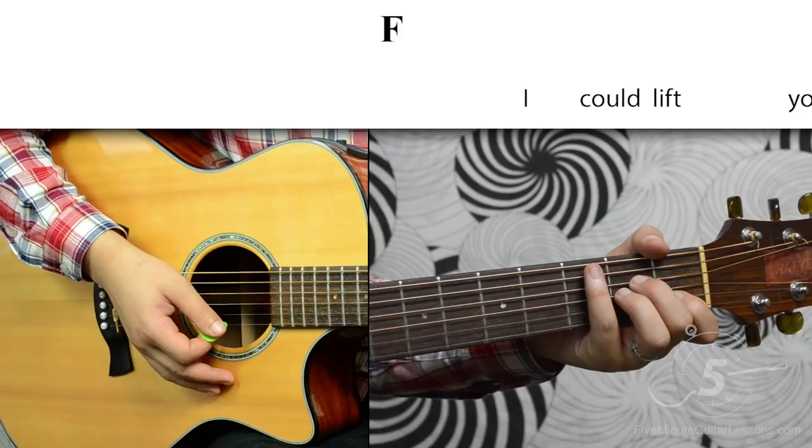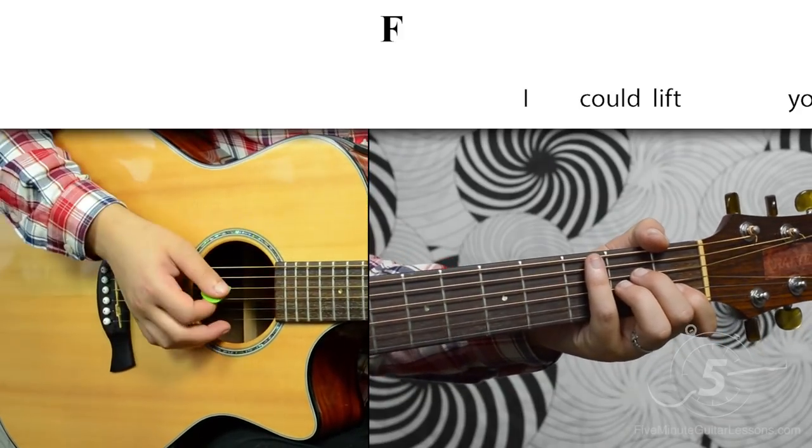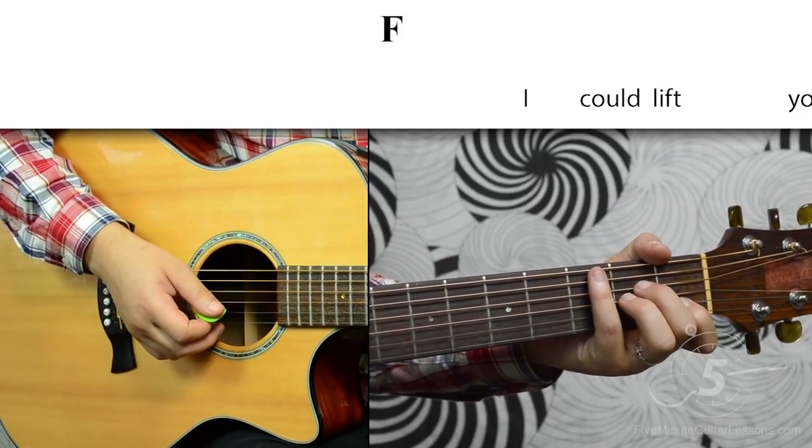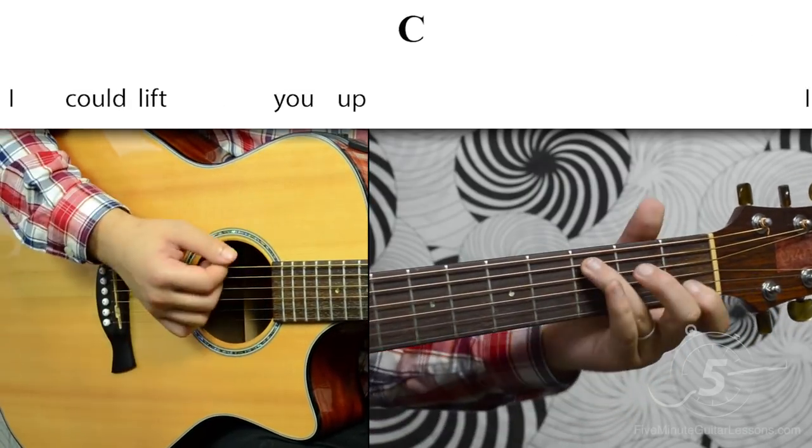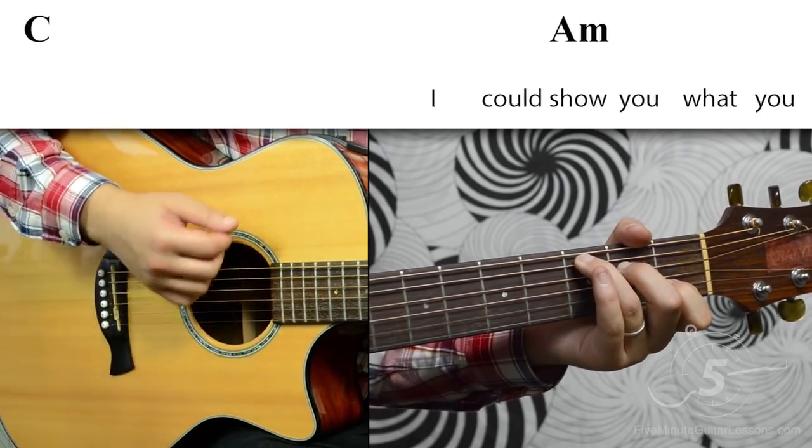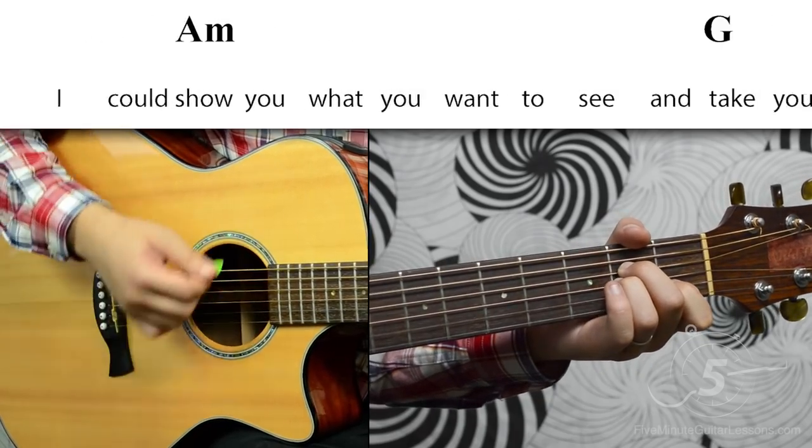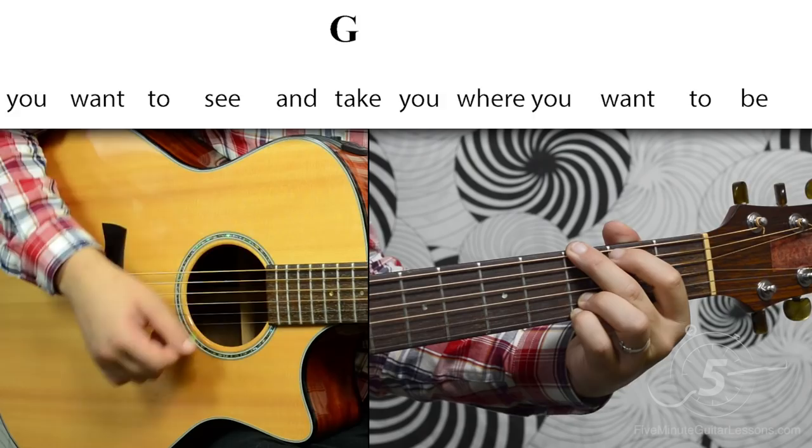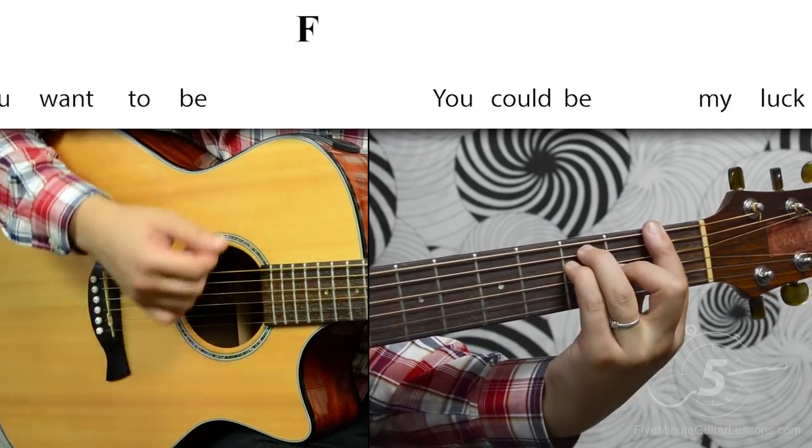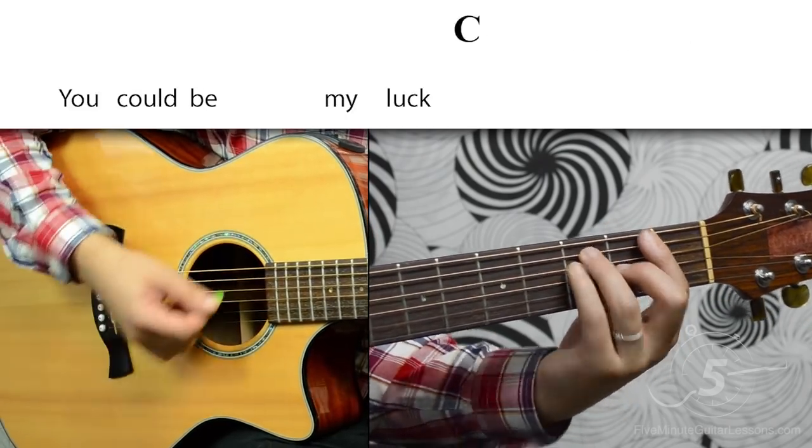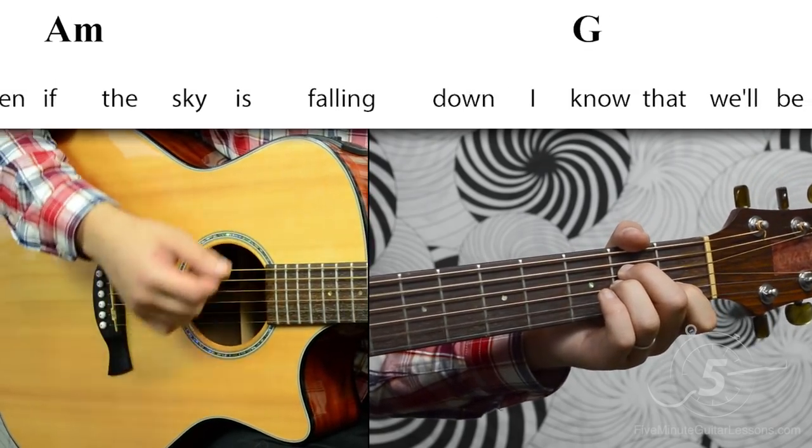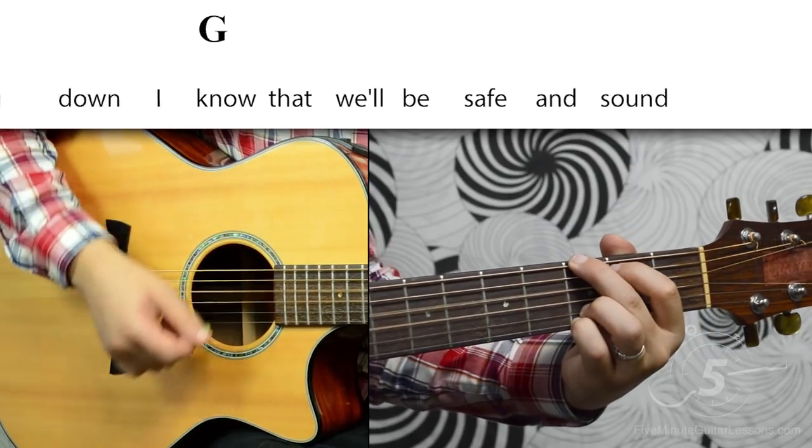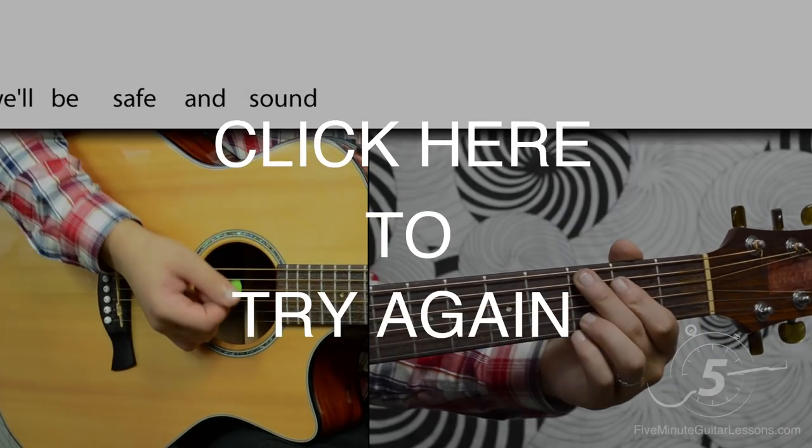Now we can try playing the verse together. We're going to do four down strokes per measure. One, two, three, four, one, two, three, four.